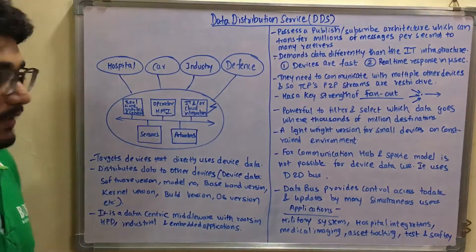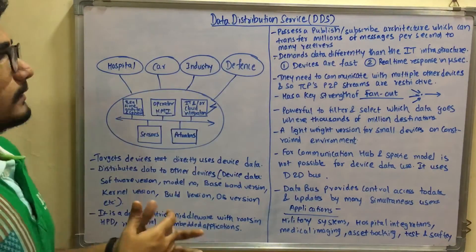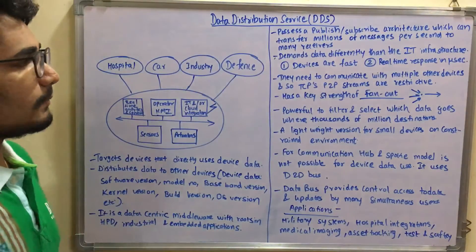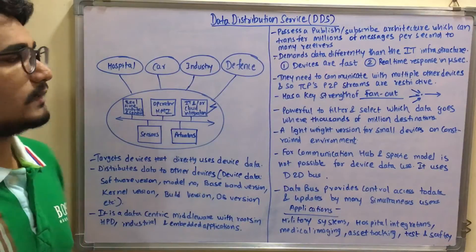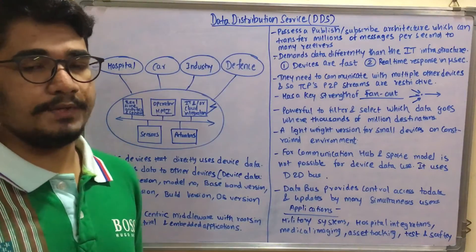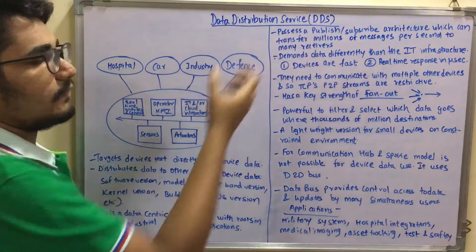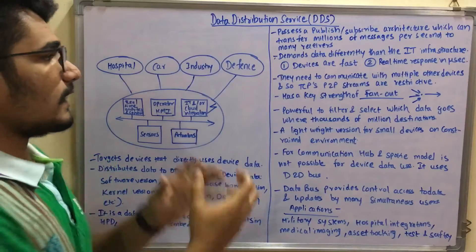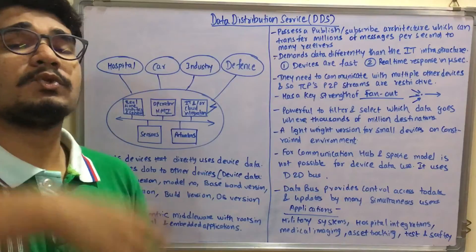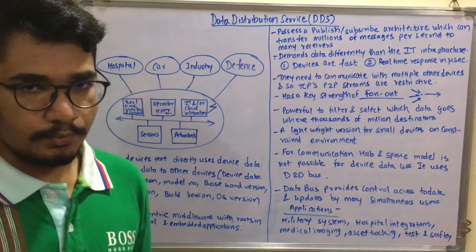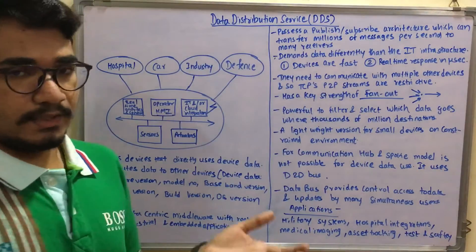DDS possesses a publisher-subscriber architecture which can transfer millions of messages per second to many receivers. Like in MQTT protocol, it is a publish-and-subscribe mechanism — the publisher creates one message, and if there are N number of subscribers, that message can reach millions across different destinations at any point in time.